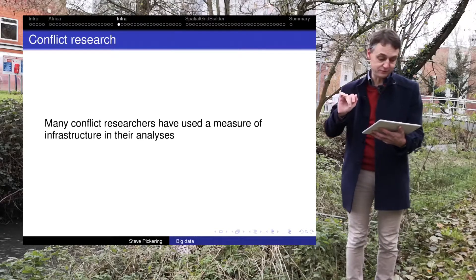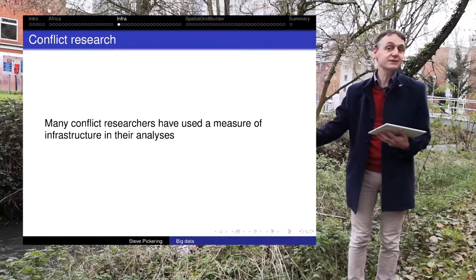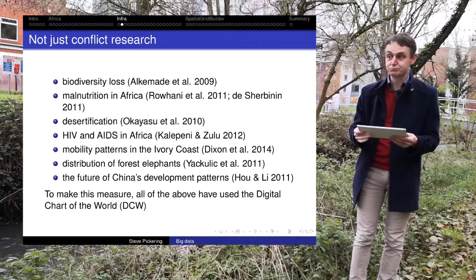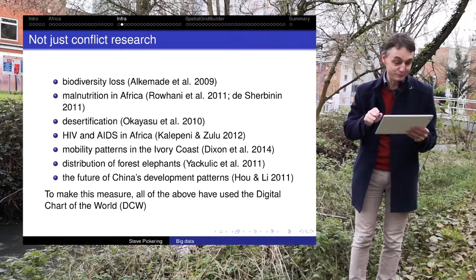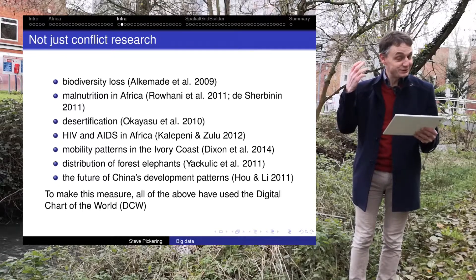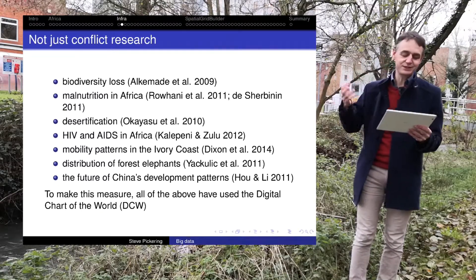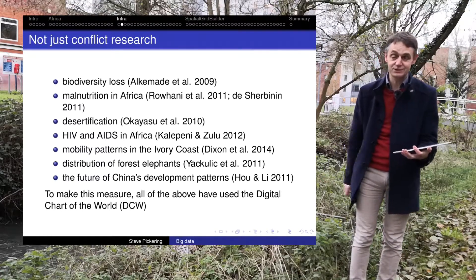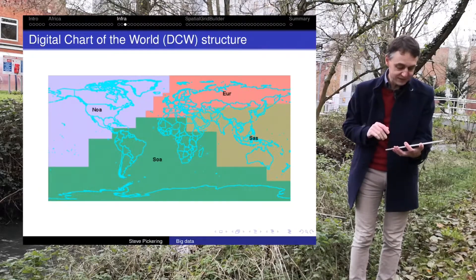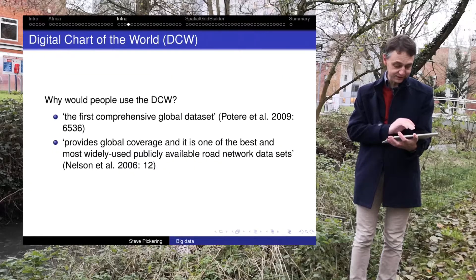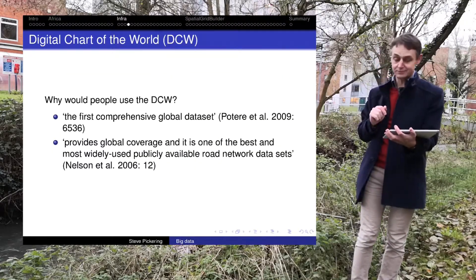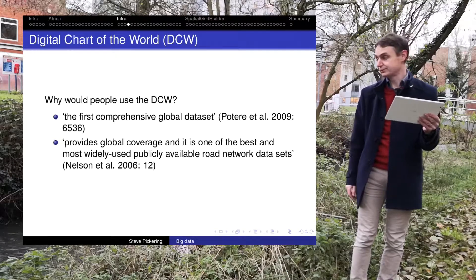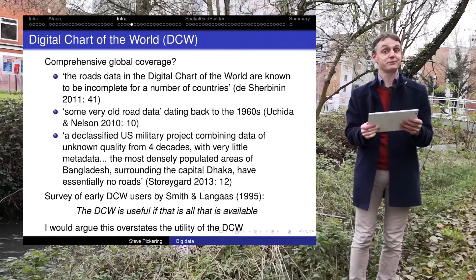How did we construct that infrastructure variable? We didn't have one, so a lot of researchers have used something else. It's been used in studies of biodiversity loss, malnutrition in Africa, desertification, HIV/AIDS — but it's all based on the Digital Chart of the World, put together by an organisation called ESRI. It divides the world up along specific lines. It was described as the first comprehensive global dataset providing global coverage and one of the best and most widely used publicly available road network datasets. I would disagree with all of that.